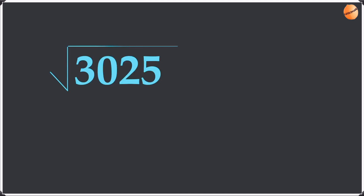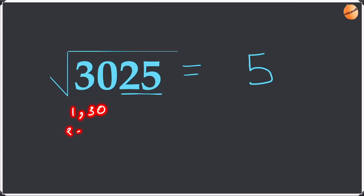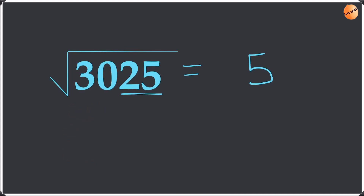Our next example is 3025. We do the same thing — find the square root of 25, which is 5. Then find the consecutive factors of 30. The factors of 30 include 1 and 30, 2 and 15, and 6 and 5. As you can see, 5 and 6 are consecutive. We choose the smaller one, which is 5, and write it in front of the other 5.